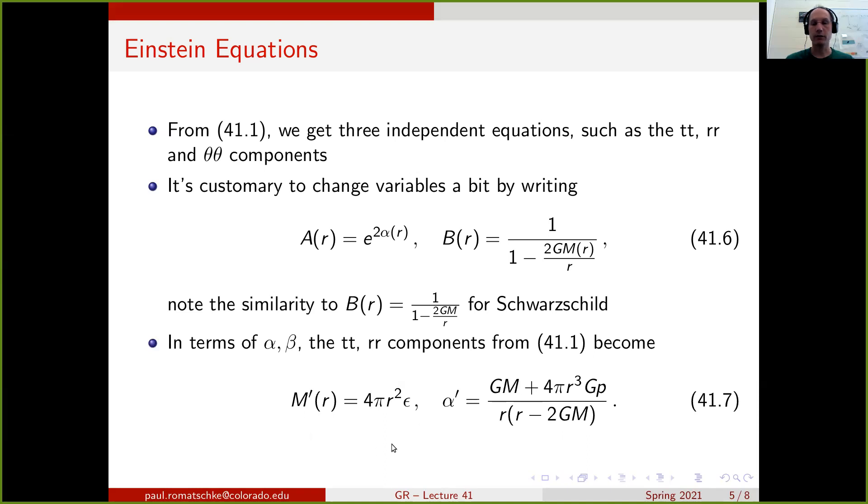From these results, it should already become clear why we chose this particular change of variables for B, because if you look at this equation here, we find that the change in mass with respect to radius is given as 4 pi r squared times energy density, where 4 pi r squared is the surface of a spherical shell,